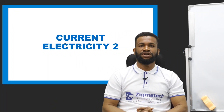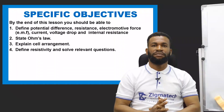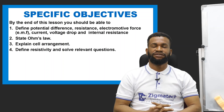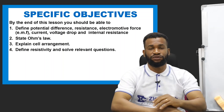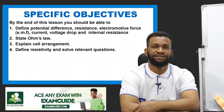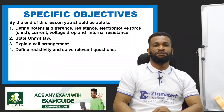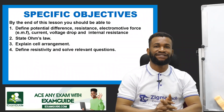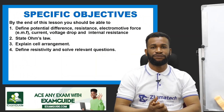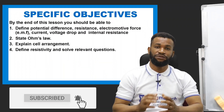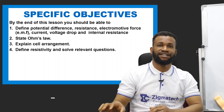Welcome to physics class. Today we want to look at electricity part 2. By the end of this lesson, you should be able to define potential difference, resistance, electromotive force (EMF), current, voltage drop, and internal resistance. You should also be able to state Ohm's law, explain cell arrangement, define resistivity, and solve relevant problems.